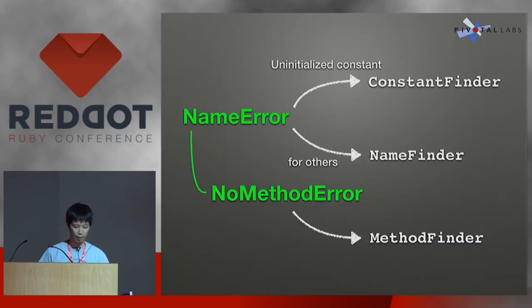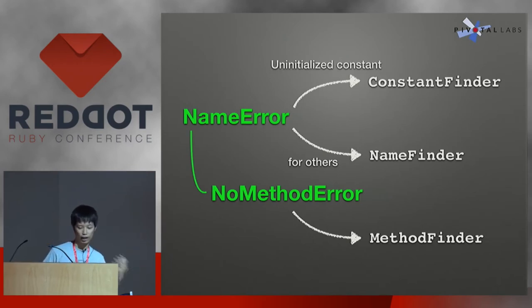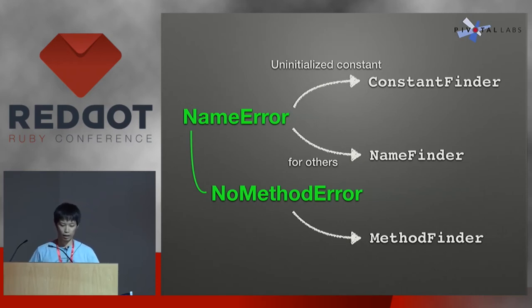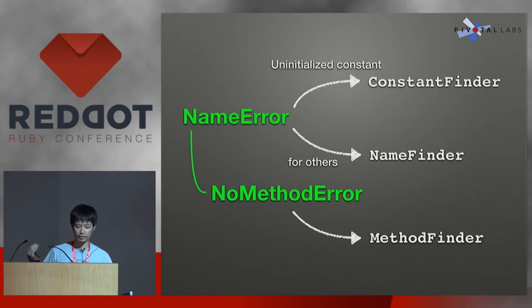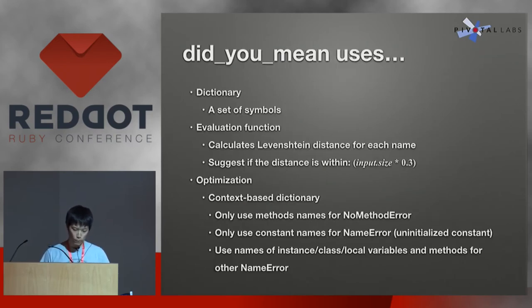DidYouMean gem uses a pattern called the finder pattern. For example, if you get a NameError about an uninitialized constant, it's going to use a ConstantFinder, which only knows about the list of constant names. And if the error is a NoMethodError, it's going to use a MethodFinder, which only knows about the method names you can call.